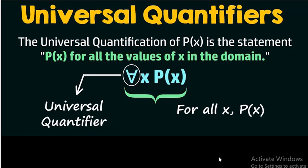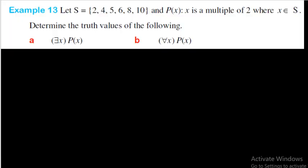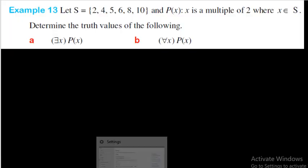When you come to the universal quantifier, it can be expressed as: for all x, P(x). That means for every x from the domain, P(x) should be satisfied. Let us see this by example. The first example has our domain as the set S.